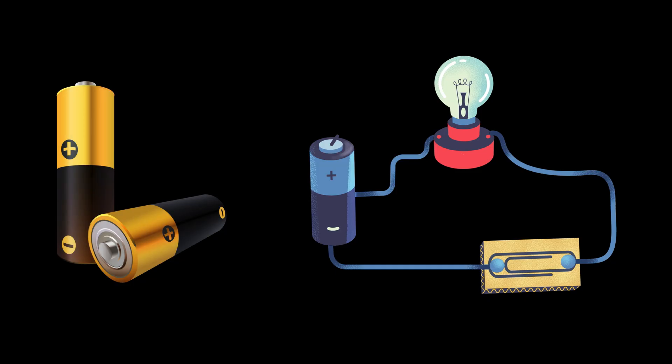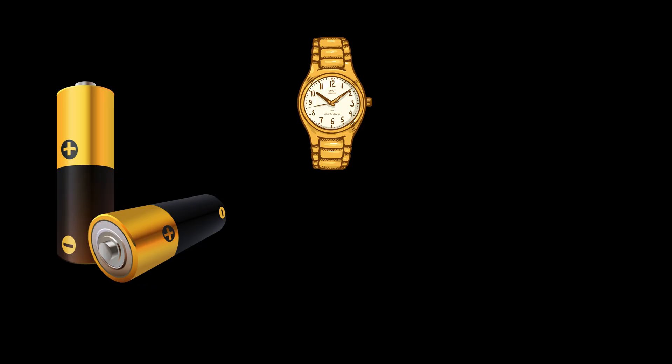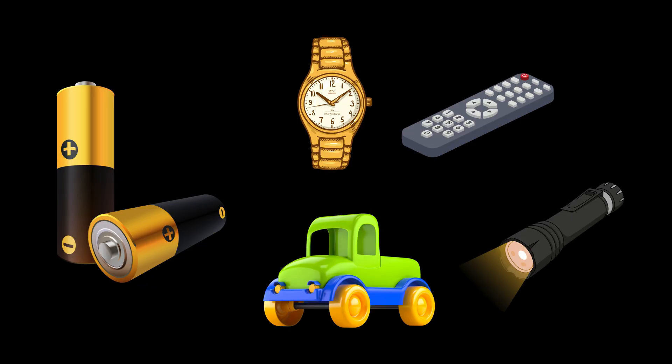These are small, chemical-based devices that can produce a limited amount of electricity for a short time. They are useful only for small gadgets like wristwatches, remote controls, flashlights, and toys.